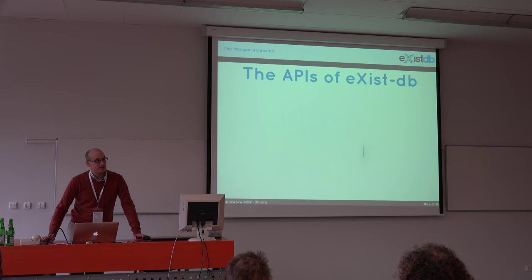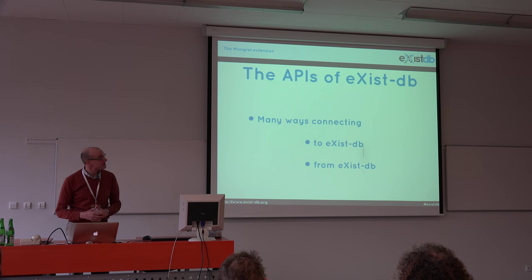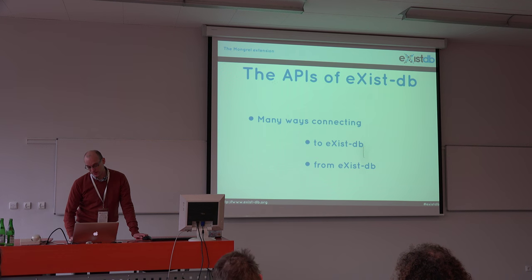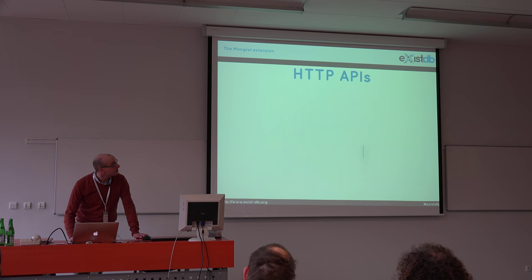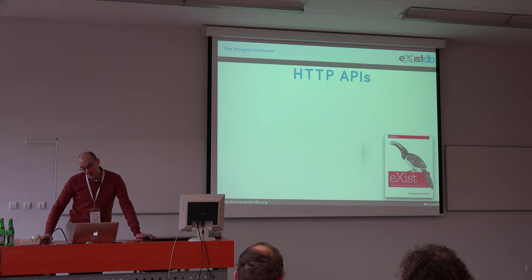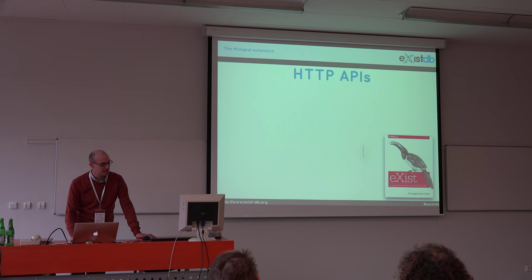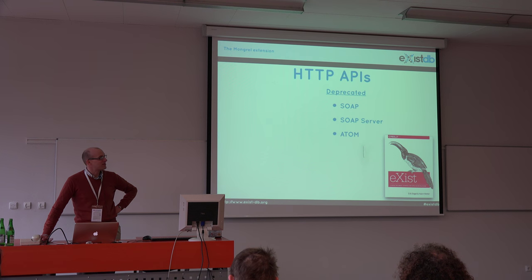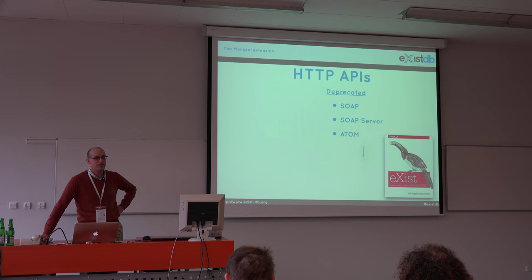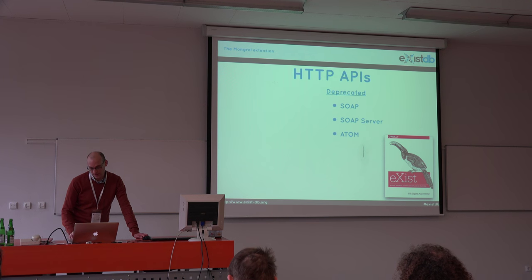The APIs of eXist. eXist is pretty well known for a large number of ways of connecting to and from eXist. The most used APIs are of course the HTTP APIs. Most of the names are derived from the book written by Adam and Eric Siegel, who will both be available at the conference later. I'd like to mention a few of the old HTTP APIs — the SOAP server and the Atom API — which are still available but should probably not be used anymore, and I don't think there's much maintenance done on them.